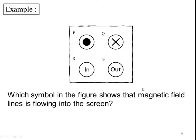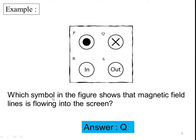Let us do some exercise to reflect our knowledge of the magnetic field. Which of the symbols in the figure shows that the magnetic field line is flowing into the screen? The answer should be Q, because the symbol for magnetic field lines going into the screen is represented by the cross.